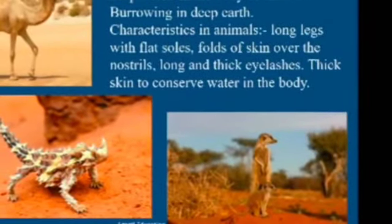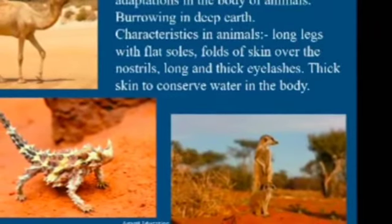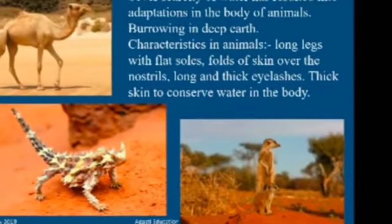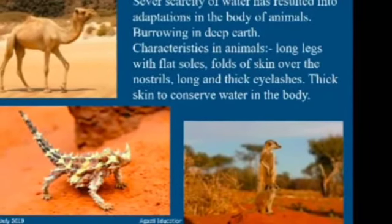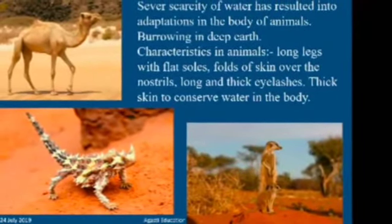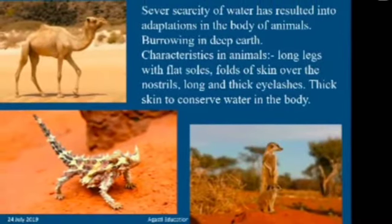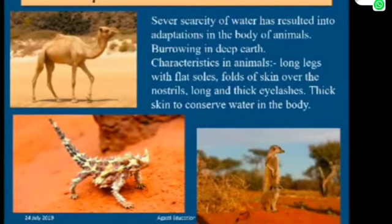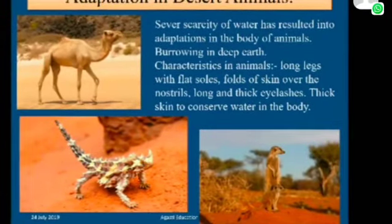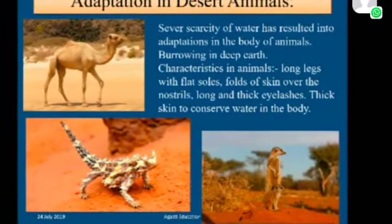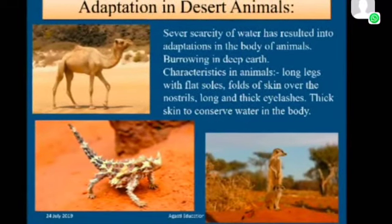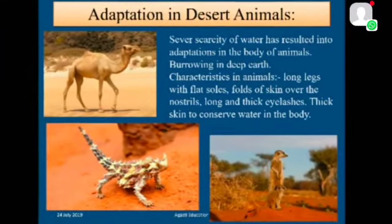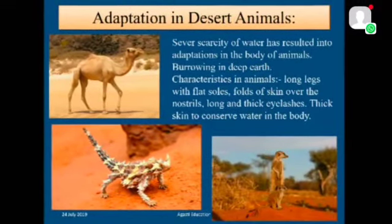Let us see adaptation in desert animals, which are living with very less water. The scarcity of water has resulted in adaptations in the body of animals: long legs with flat soles, holes of skin over the nostrils, long and thick eyelashes, and thick skin to conserve water in the body.